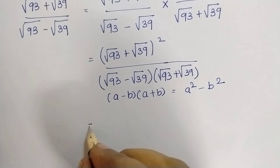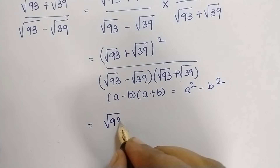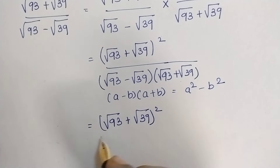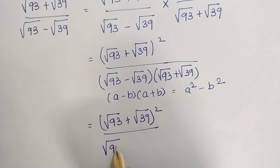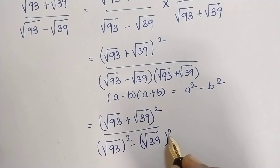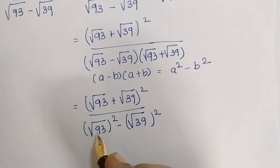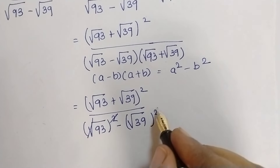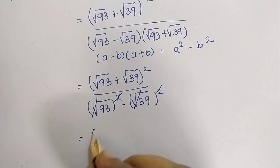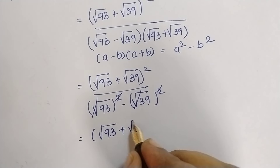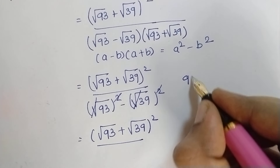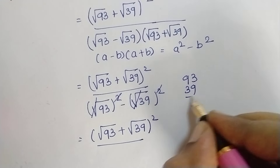Using that formula, this becomes root 93 plus root 39, the whole square, divided by root 93 the whole square minus root 39 the whole square. In the denominator, the square and root cancel each other. So what we have remaining is root 93 plus root 39, the whole square, divided by 93 minus 39.